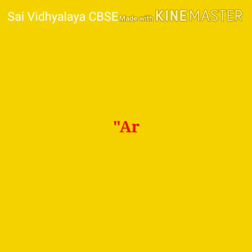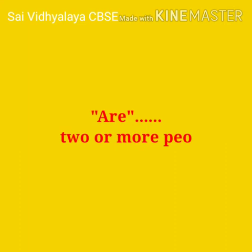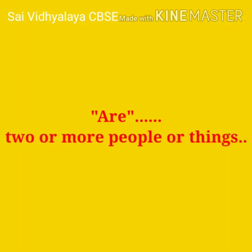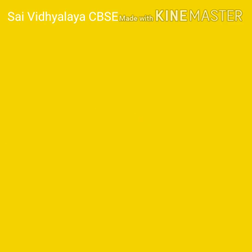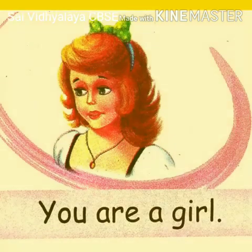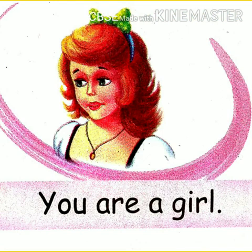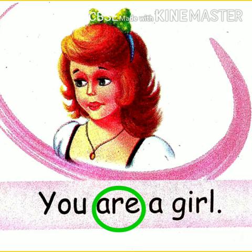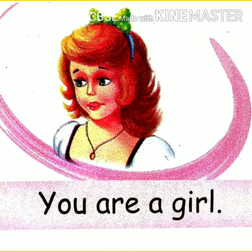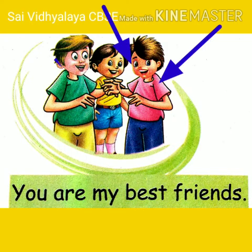Next, the use of are. When we talk about two or more people or things, we use are. Are is used with you, we, and they. You are a girl — only one person, but you is used for both singular and plural, so we still use are for you: you are a girl.